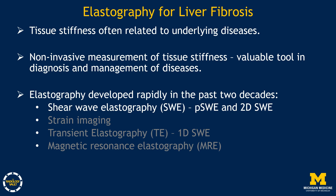Tissue stiffness is often related to underlying diseases. For centuries, doctors have relied on palpation to detect tumors, particularly those located near the body surface. Elasticity imaging provides a non-invasive method for measuring tissue stiffness, functioning like an extension of the doctor's hands to palpate deeply located tumors. This technique is a valuable tool in diagnosis and management of diseases. Over the past two decades, elastography techniques have advanced rapidly. Today, most modern ultrasound scanners come equipped with shear wave elastography, including point shear wave elastography and two-dimensional shear wave elastography.